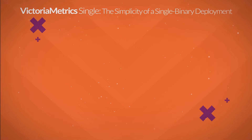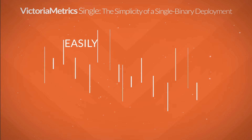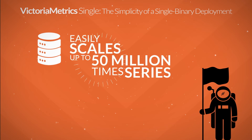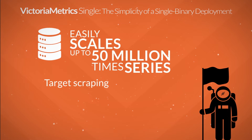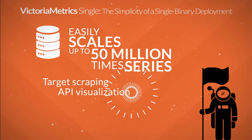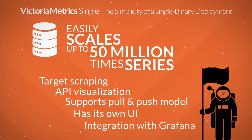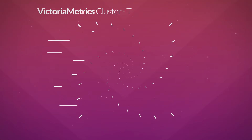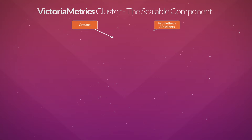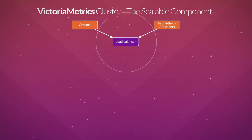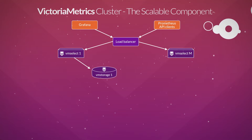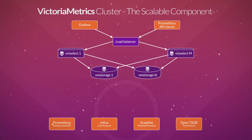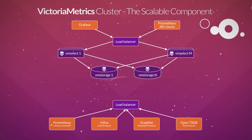VictoriaMetrics Single is a powerful system that scales easily up to 50 million active time series, with features such as target scraping, API visualization and more, all in a single node. VictoriaMetrics Cluster is a scalable component that provides horizontal scaling for any load. It comes with multi-tenancy, replication and sharding out of the box.